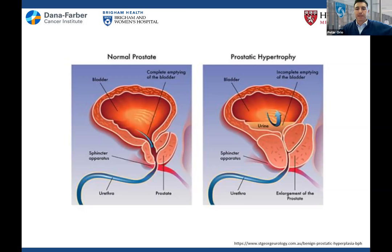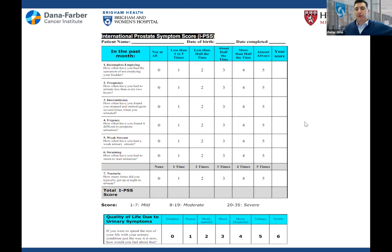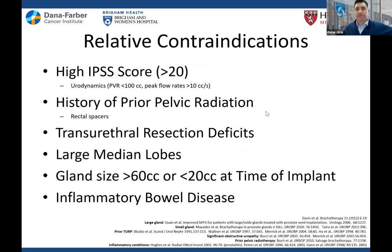I spend a lot of time with patients looking at IPSS scores — I find this very beneficial, but sometimes patients don't truly understand what they're filling out and it requires discussion. High IPSS scores indicate obstructive-like symptoms. If the prostate is just a big ball pushing on the urethra and they can't pee, brachytherapy becomes more difficult. We want to treat accordingly or make sure we really want to bring those folks to the OR. These are relative contraindications — they're all evolving.